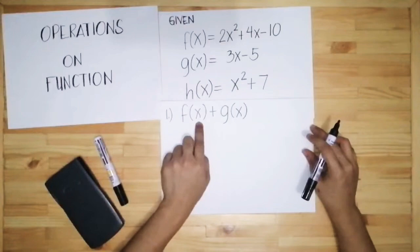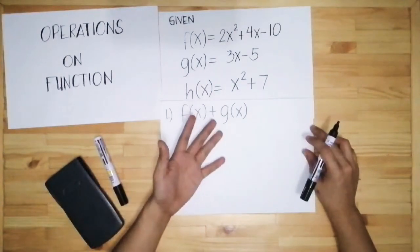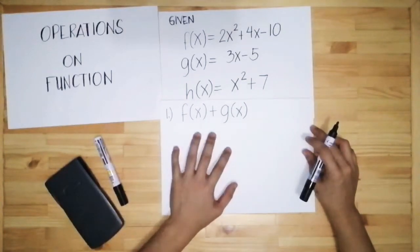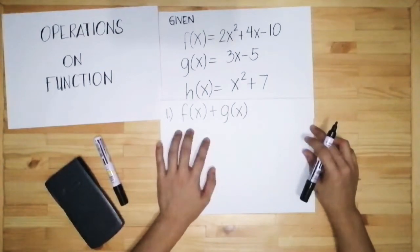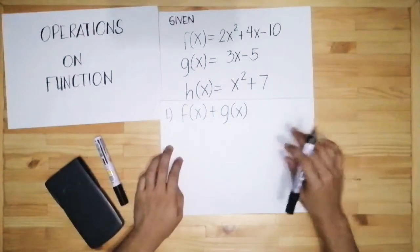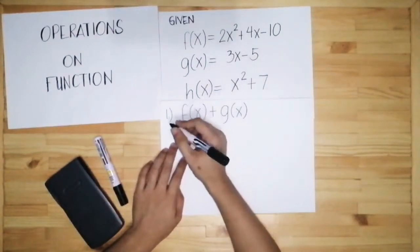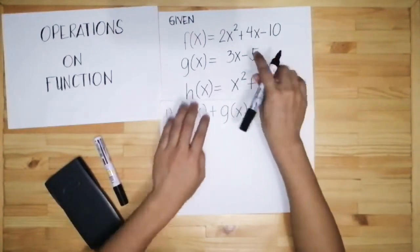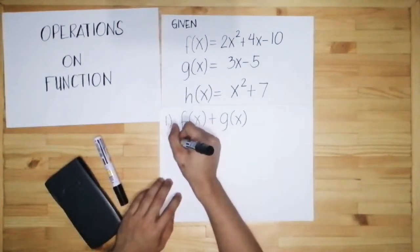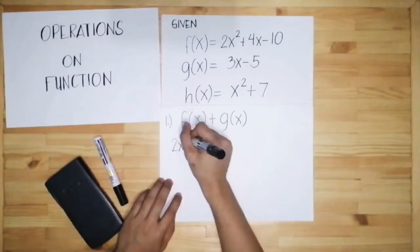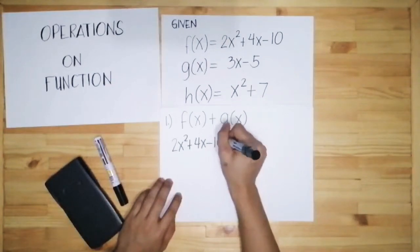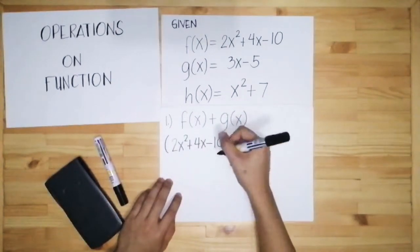As you can see, we don't have the value of x. There are times that x will have a value, but in this example x doesn't have a value, so we just have to combine like terms. For f of x, we just put the equation of f of x, which is 2x squared plus 4x minus 10. Let's put that in parentheses.